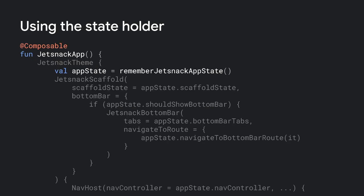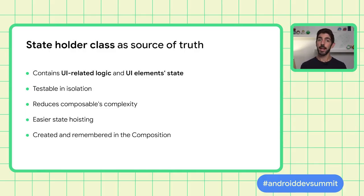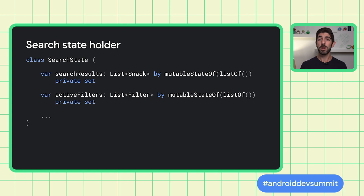In JesnackApp, we get an instance of the app state that we use to pass the hoisted state into composables, check when to show UI elements, and call functions to trigger UI-related actions. In a nutshell, a state holder is a plain class that hoists UI element state and contains UI-related logic. This favors separation of concerns, reduces composable complexity, and favors testability. It also makes state hoisting easier, as there is only one state to hoist instead of multiple. State holders can be really simple — for example, a SearchState class containing only a list of active filters and search results. Use a state holder to help manage complexity when you need to track state or UI logic.